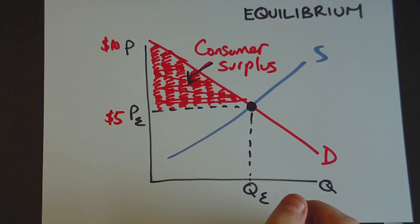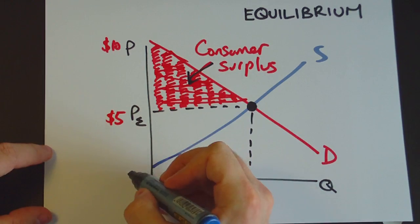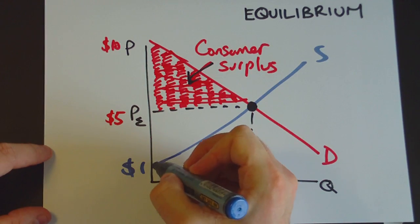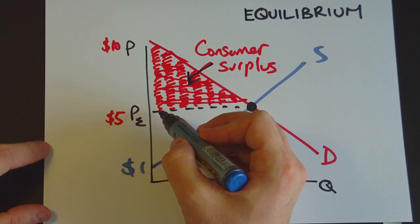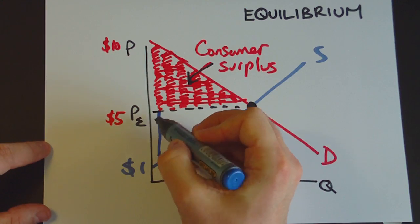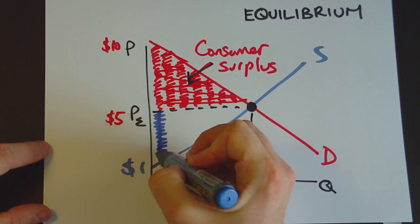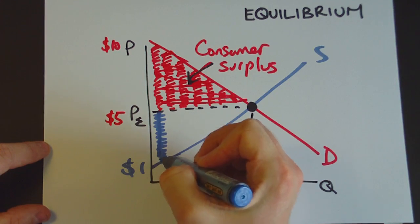Now also you might like to think about an individual firm here who might be willing to supply the good for just $1. But when he sells it in the market he's actually able to get $5 for it. So again this producer here, this seller here is pretty happy because they're willing to sell it for $1.